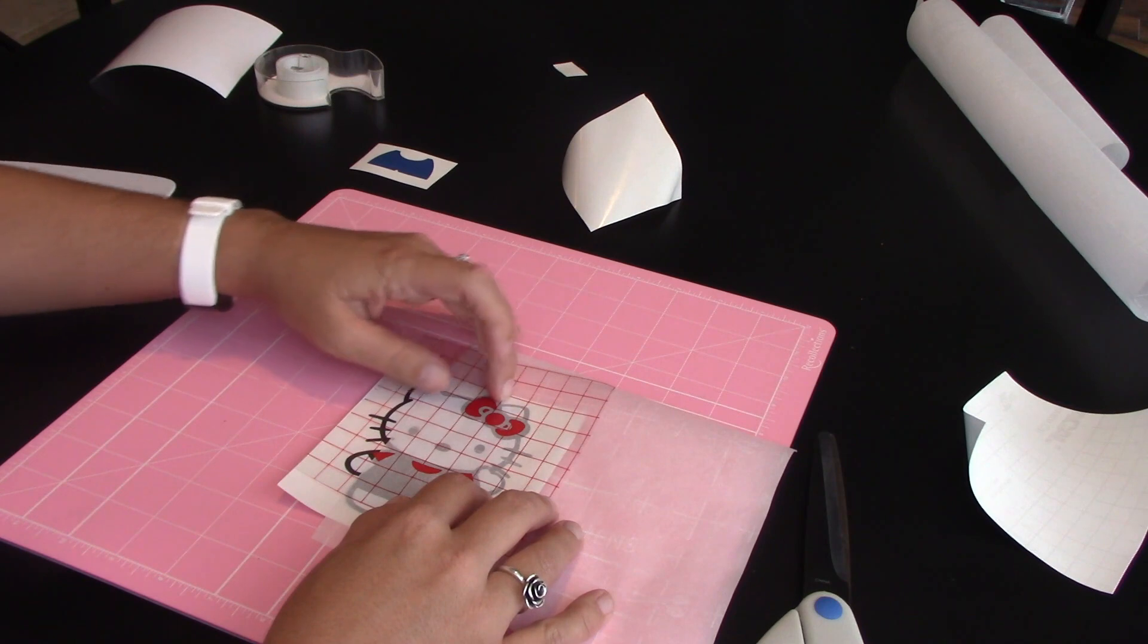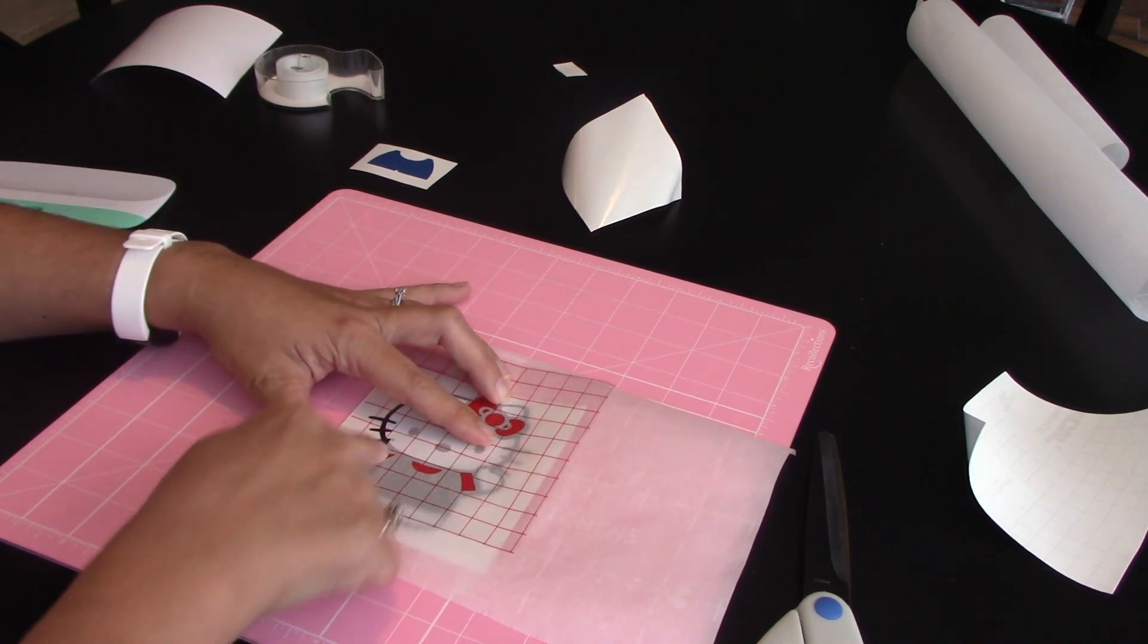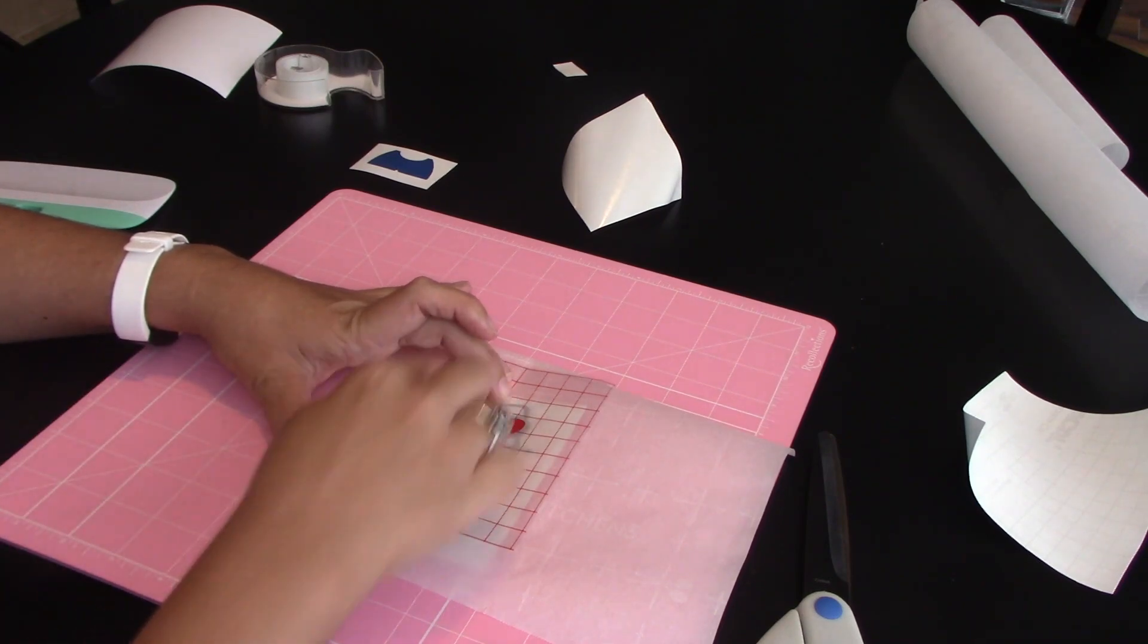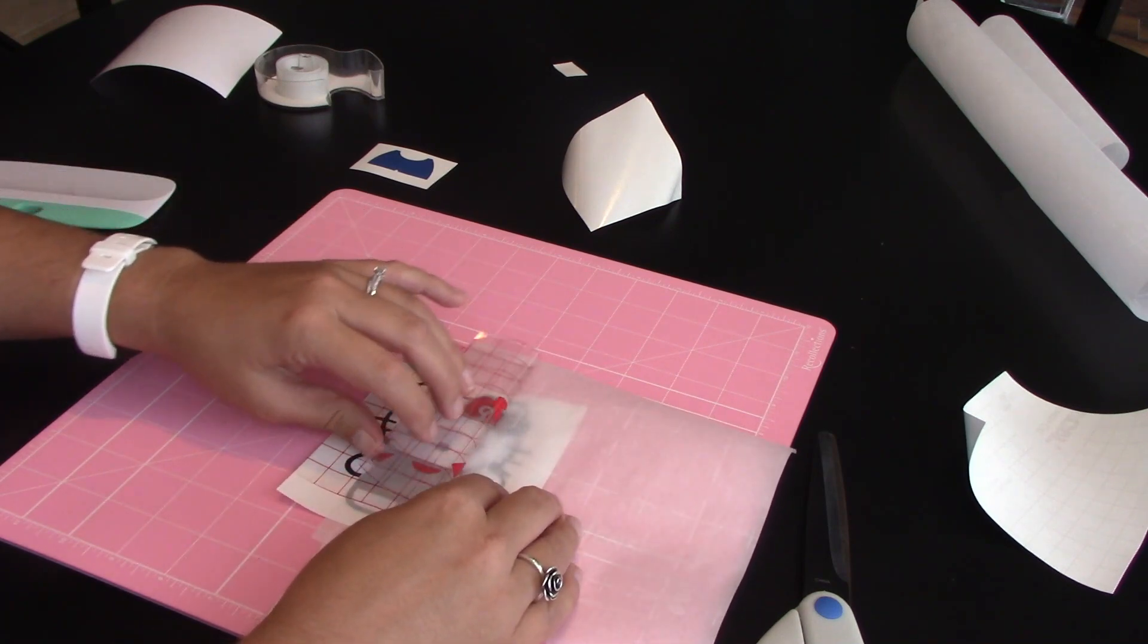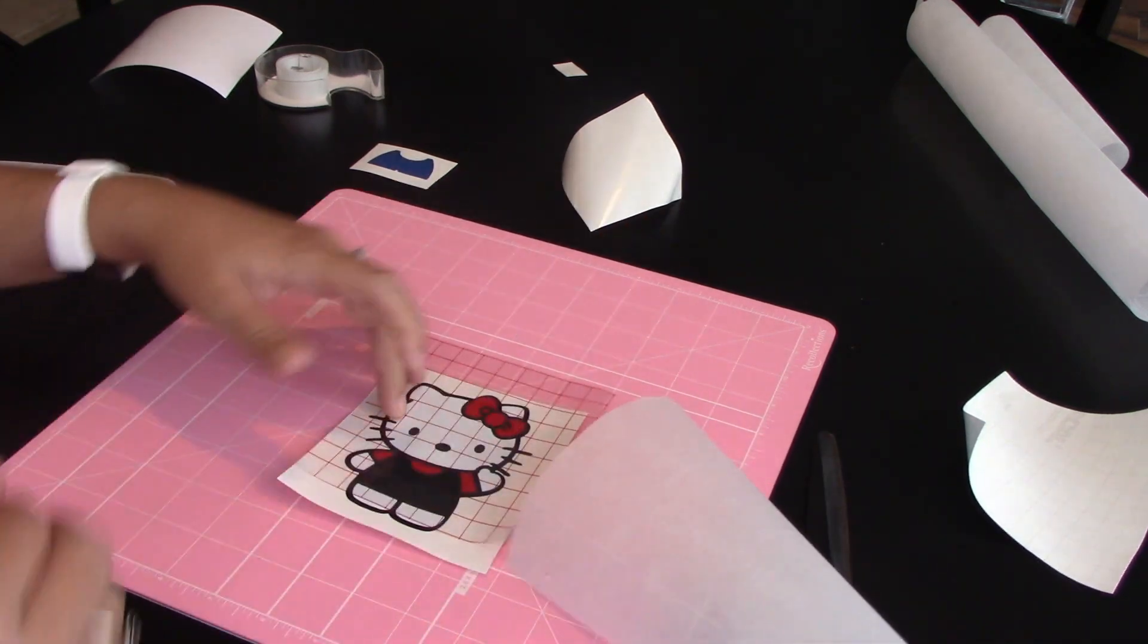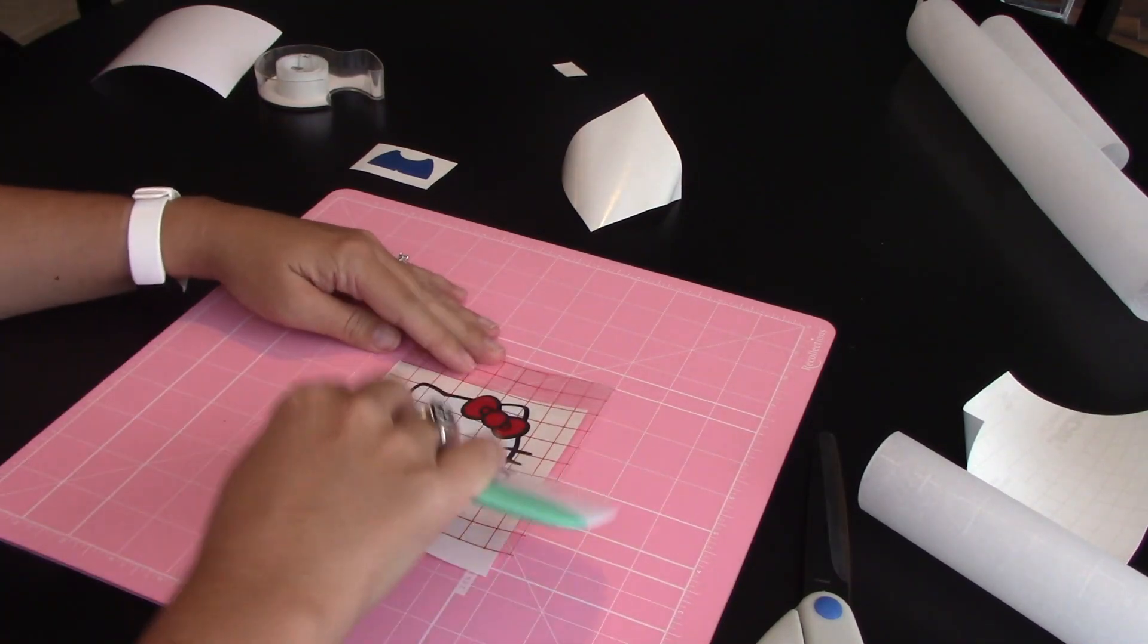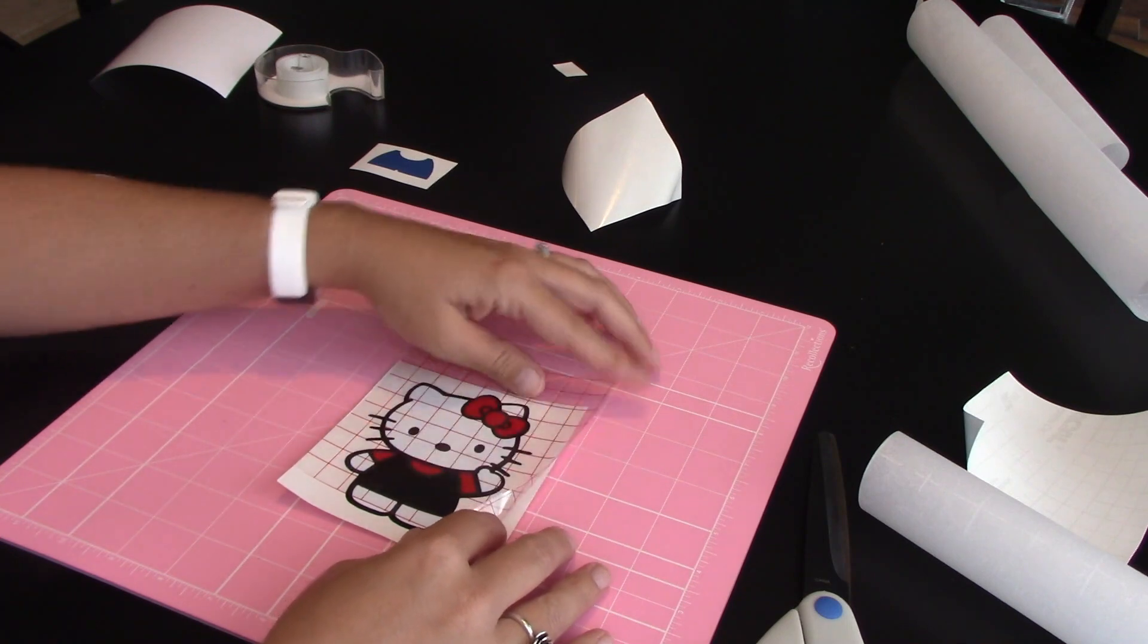So that's going to be exactly where I want it to be. I've got this little piece right here still stuck to the black so that I can lift it up without it moving. Slide my parchment paper out and just put it right down. Burnish, burnish, and move on.